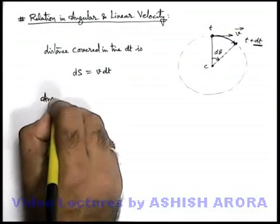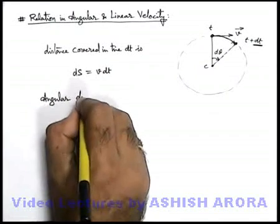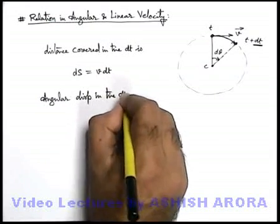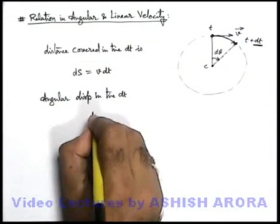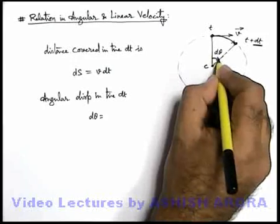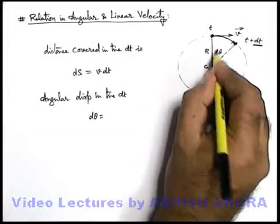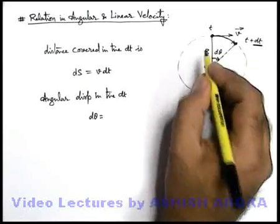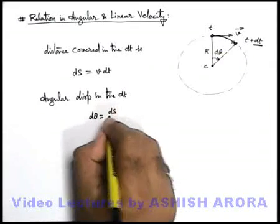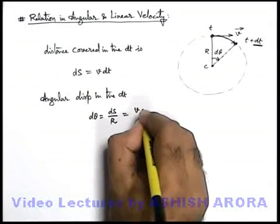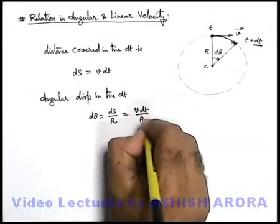In this situation, the angular displacement in time dt can be written as dθ, and this angular displacement dθ can be written as arc upon radius. Say if the particle is revolving in a circle of radius R, it can be written as ds upon R. If we just substitute the value of ds, we can see we'll get v dt upon R.